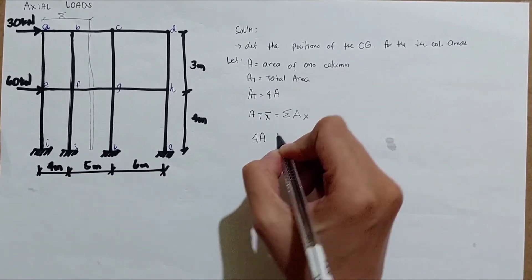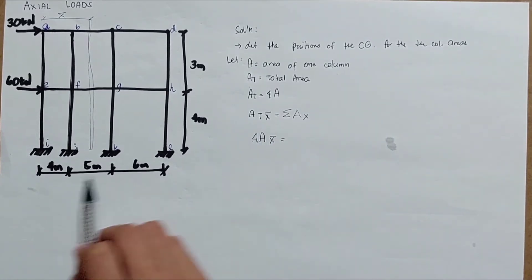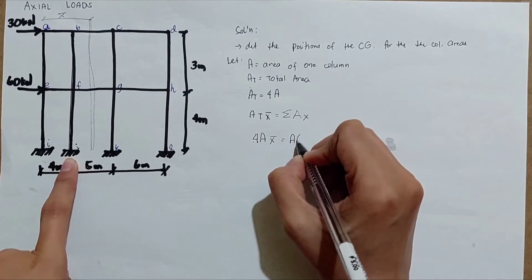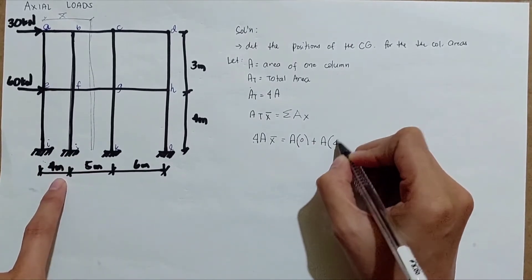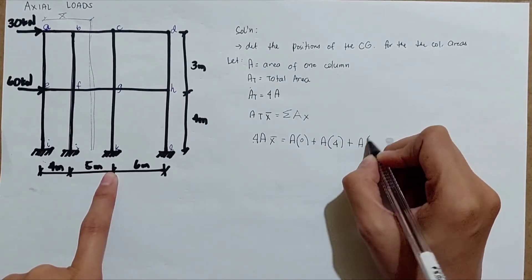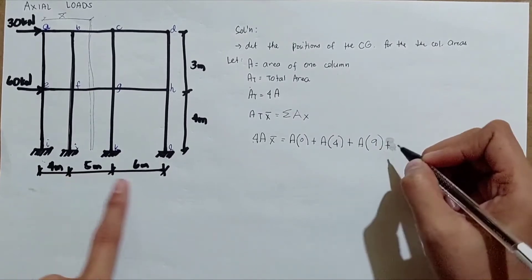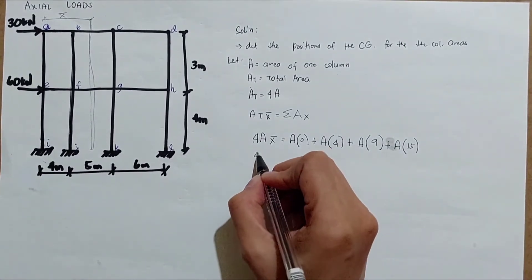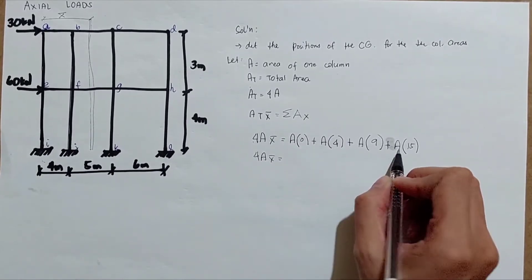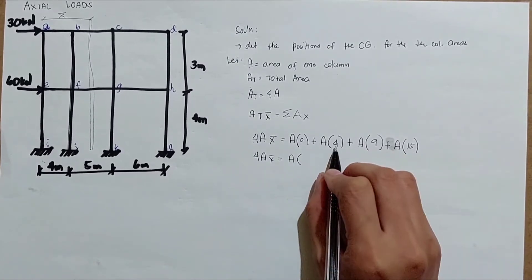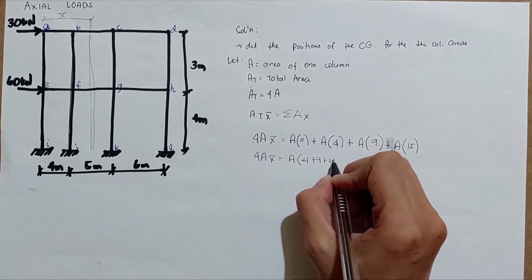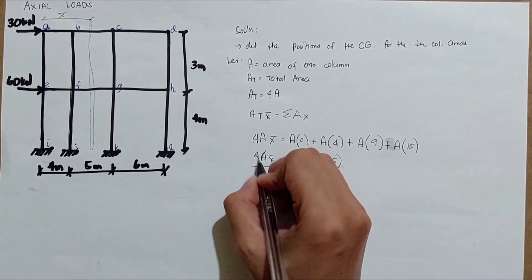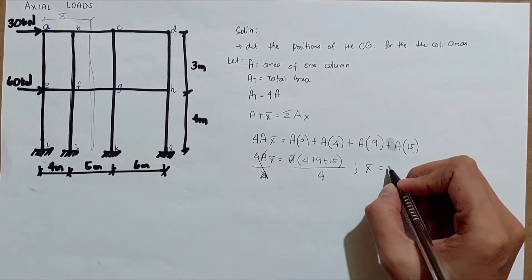With the leftmost column at the reference (distance zero), the second column is at 4m, the third at 9m, and the fourth at 15m. So: 4a × x̄ = a(0) + a(4) + a(9) + a(15). Simplifying: 4a × x̄ = a(4 + 9 + 15). Dividing both sides by 4a gives x̄.